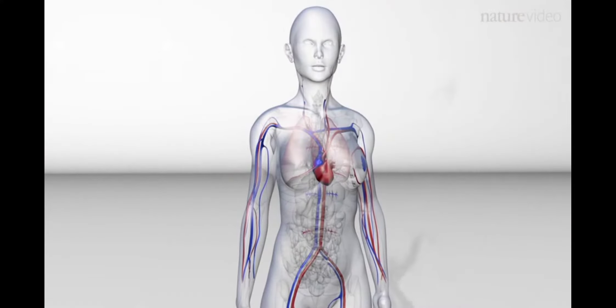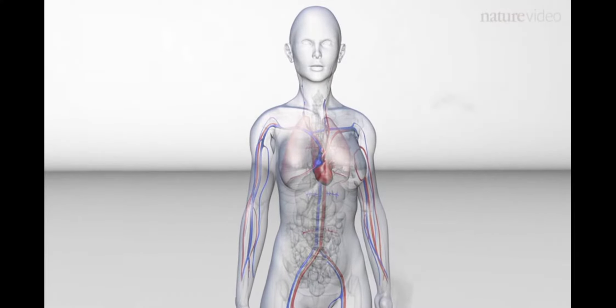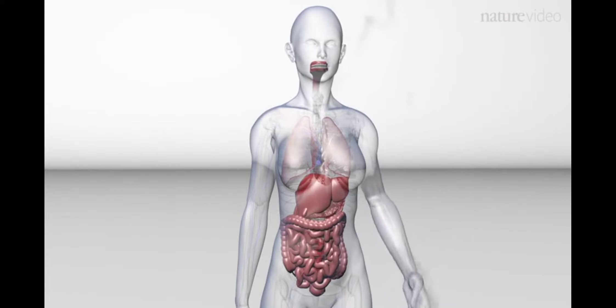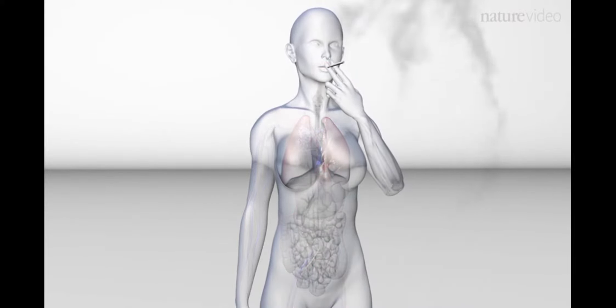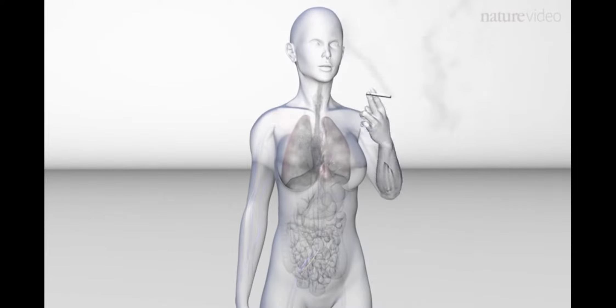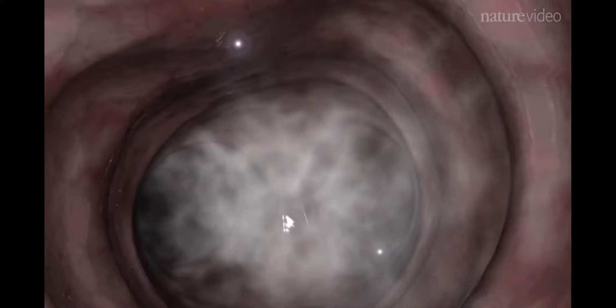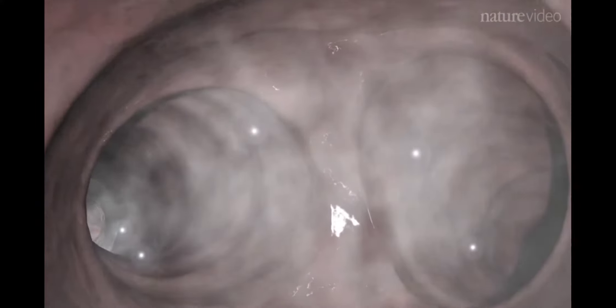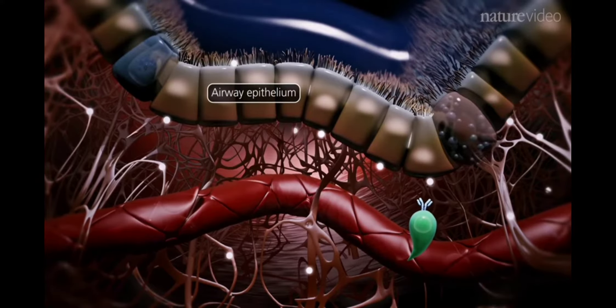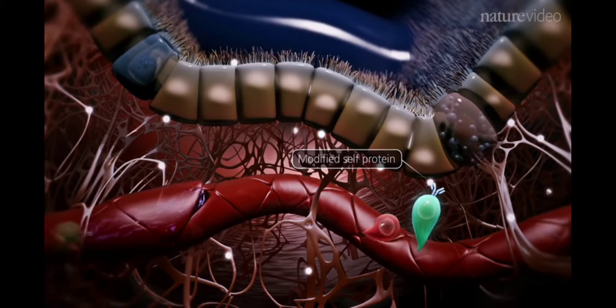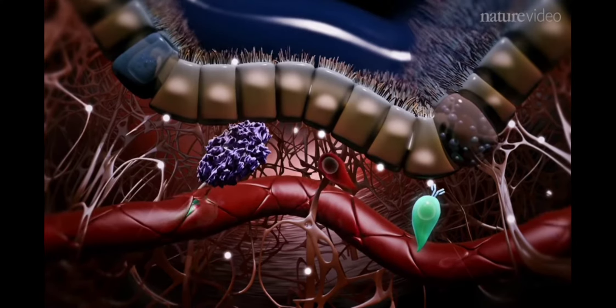These early auto-antibodies are thought to first develop outside of the joints, possibly in the gut, mouth, or lungs. Environmental factors such as smoking can modify self-proteins, making them targets for the immune system. One particular modification is called citrullination. When the immune system recognizes these modified self-proteins, it leads to a breach of self-tolerance and the production of autoreactive B cells and auto-antibodies.